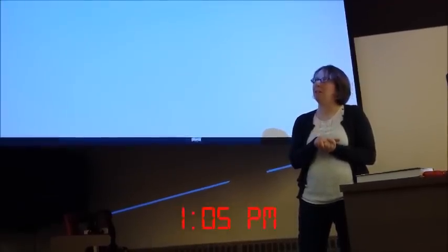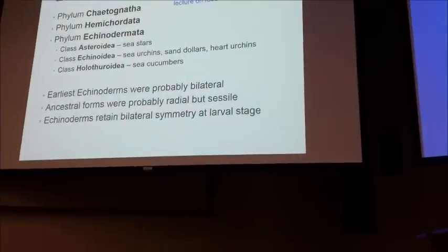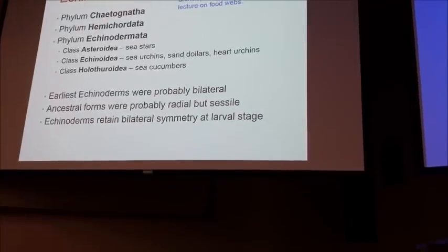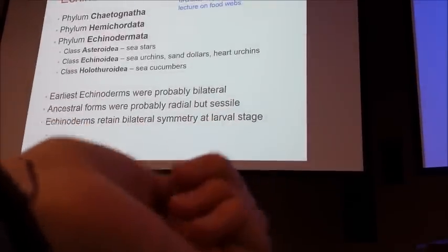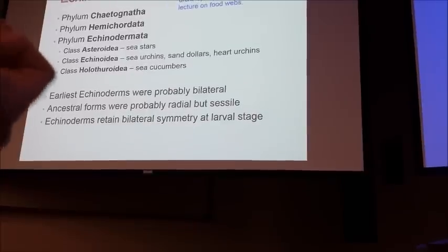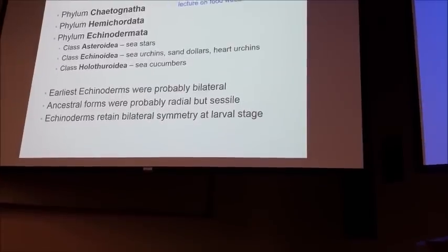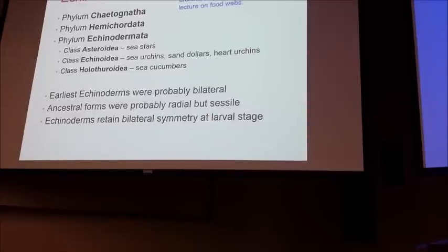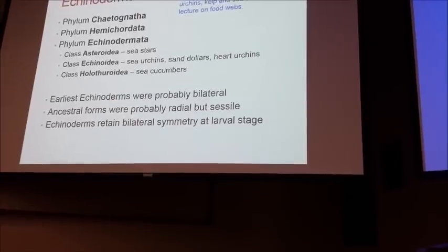In a Durham lecture, I gave an example of sea urchins, kelp, and sea otters. The sea otters were hunted almost to extinction, and then they realized that the sea urchins were killing all the fish because they destroyed the kelp beds that fish spawn in. So they said maybe we should protect the sea otters! And then they brought the sea otters back because sea otters are natural predators of sea urchins.